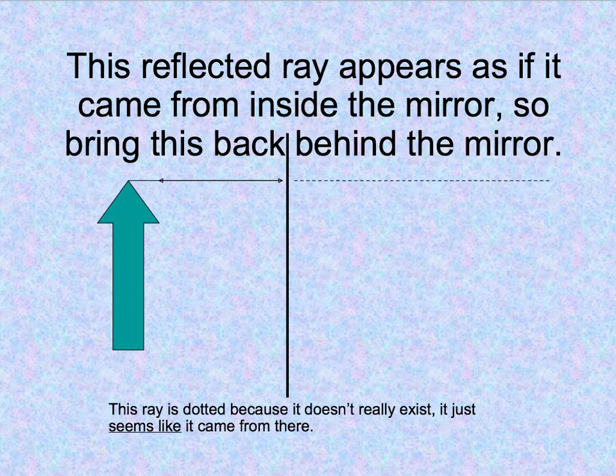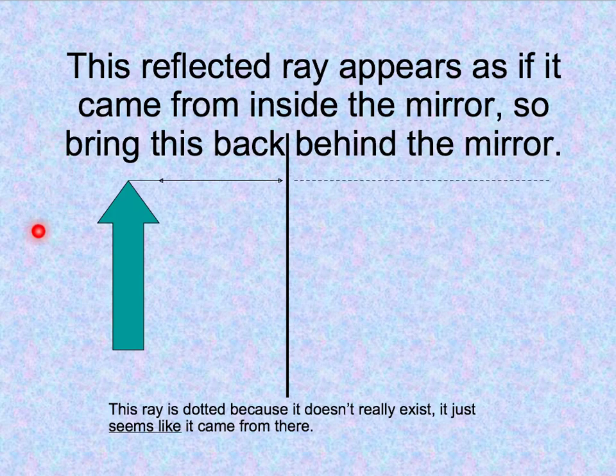This reflected ray, if I'm standing over here looking at it, this outgoing ray looks like it came from somewhere back here in the mirror. So what we're going to do is we're going to make that line dotted behind the mirror because it's not really there, it just seems like it came from there. We're going to go straight in, straight out, and bring it back behind the mirror.